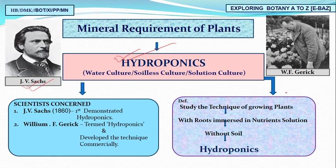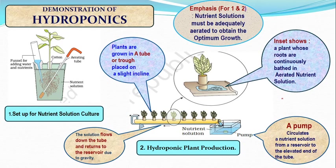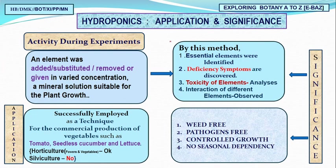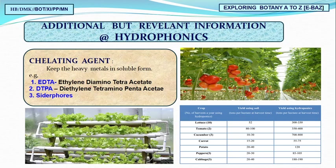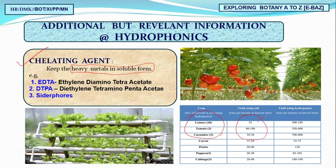We studied hydroponics — first demonstrated by Julius, then commercialized by Sachs. We studied how it is cultured and its applications and significance. Three NCERT examples: tomato, seedless cucumber, and lettuce. It is not possible for silviculture (woody plants). We also found chelating agents — those that keep heavy metals in soluble state — and the data showing efficiency increases up to 70 times more when cultured in water.